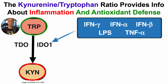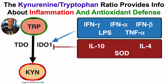But under inflammatory conditions, there are many pro-inflammatory cytokines that can induce IDO to also degrade tryptophan into kynurenine. Those include three different interferons — interferon gamma, alpha, and beta — the bacterial outer membrane component lipopolysaccharide, and TNF-alpha. Conversely, there are also anti-inflammatory proteins that can inhibit IDO1, including IL-10, IL-4, and the antioxidant enzyme superoxide dismutase (SOD).